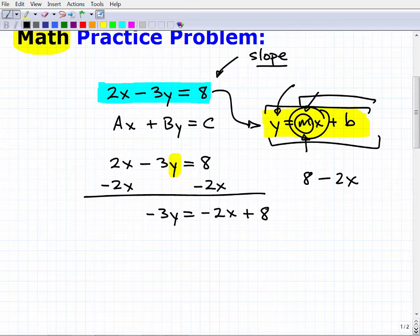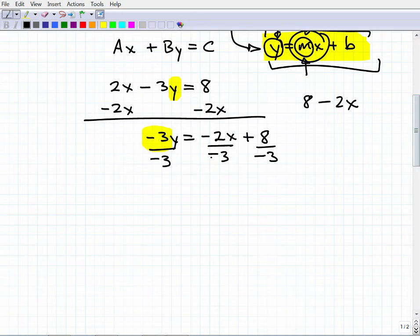We're almost there. Now what's the last step we need to take to have y by itself? We need to divide everything in the equation by negative 3. And the result of doing that, you're going to get y equals... now here be careful, this is a negative divided by a negative, so this is going to be 2/3x plus negative 8/3.